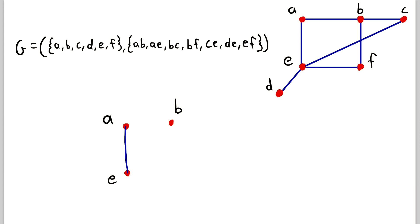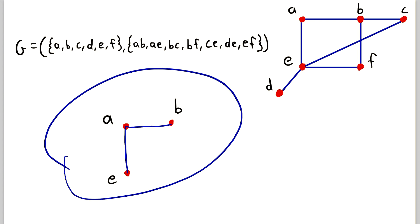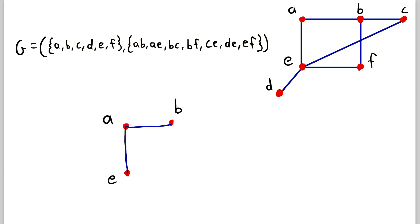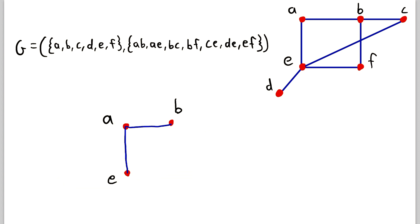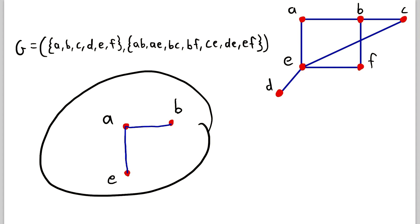What would make this a vertex-induced subgraph is if we had this one extra edge there. Now this is a vertex-induced subgraph. What makes it a vertex-induced subgraph is, first, it's a subgraph of G — every vertex and edge in this graph is also in G. It is a vertex-induced subgraph because every pair of vertices in this subgraph that is joined by an edge in the original graph is also joined by an edge in this subgraph.